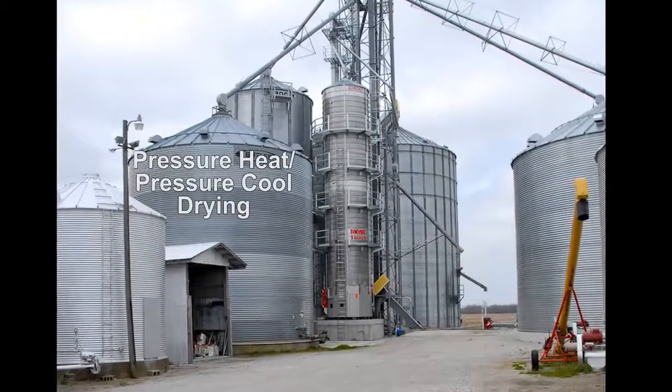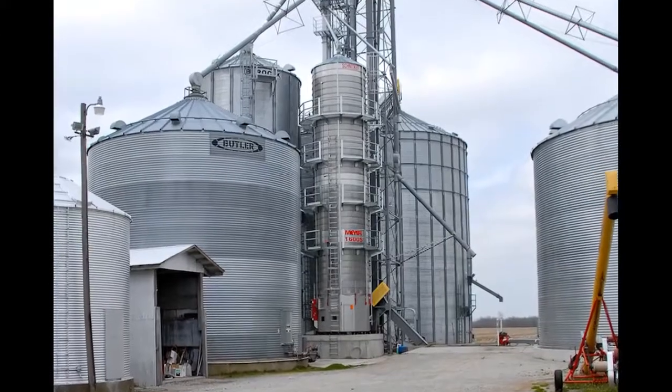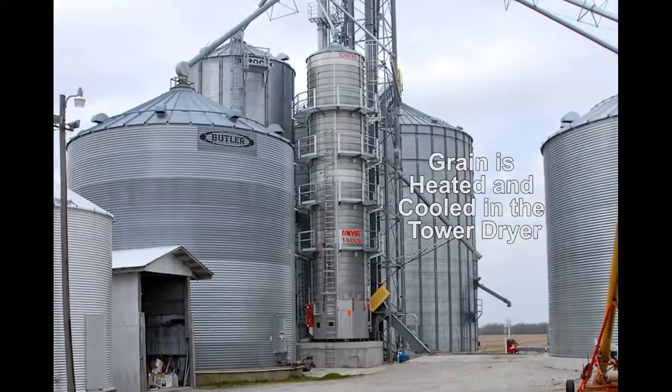Brock's Meyer Energy Miser Tower Dryer can be configured to do pressure heat pressure cool drying, where the grain is heated and cooled in the tower dryer.